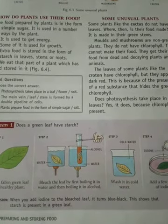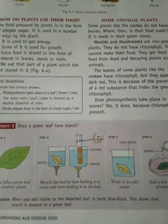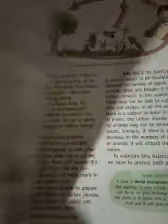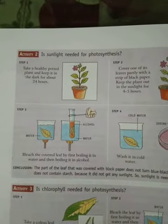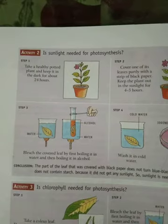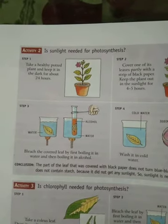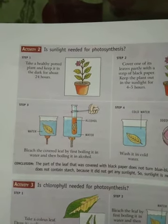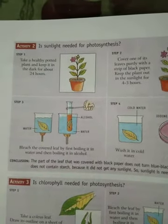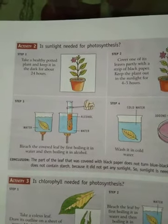This blue-black color shows that starch is present in a green leaf. So, starch is present in a healthy green leaf. Now let us move to Activity 2 on the next page. Activity 2 asks: Is sunlight needed for photosynthesis? We have to prove that sunlight is necessary for photosynthesis.